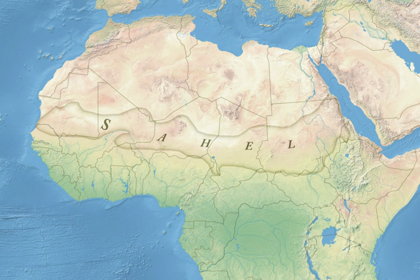The Sahel spans 5,400 km from the Atlantic Ocean in the west to the Red Sea in the east, in a belt that varies from several hundred to a thousand km in width, covering an area of 3,053,200 km².